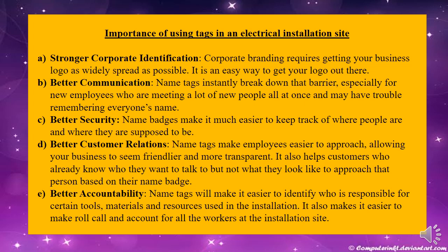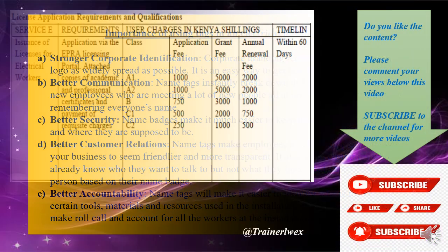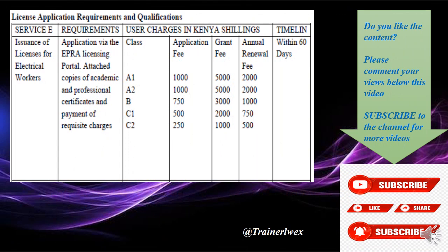Name tags build a better relationship with customers. Someone with a name tag will not act arrogantly because they know they can be identified and reported for misconduct. There is also a level of accountability — for example, when issuing items from a store, you know exactly who you issued to. If you're in Kenya and want to get licenses, depending on your level of academic qualification, you can qualify for five licenses for electrical workers, technicians, and engineers. The license ranges are A1, A2, B, C1, and C2. Licenses for contractors have not been covered here but will be covered in the next session if requested.